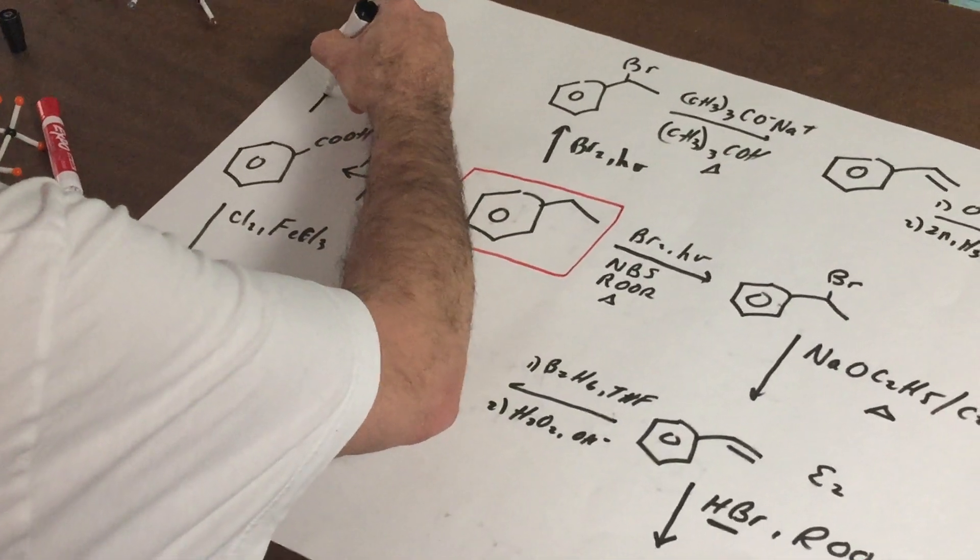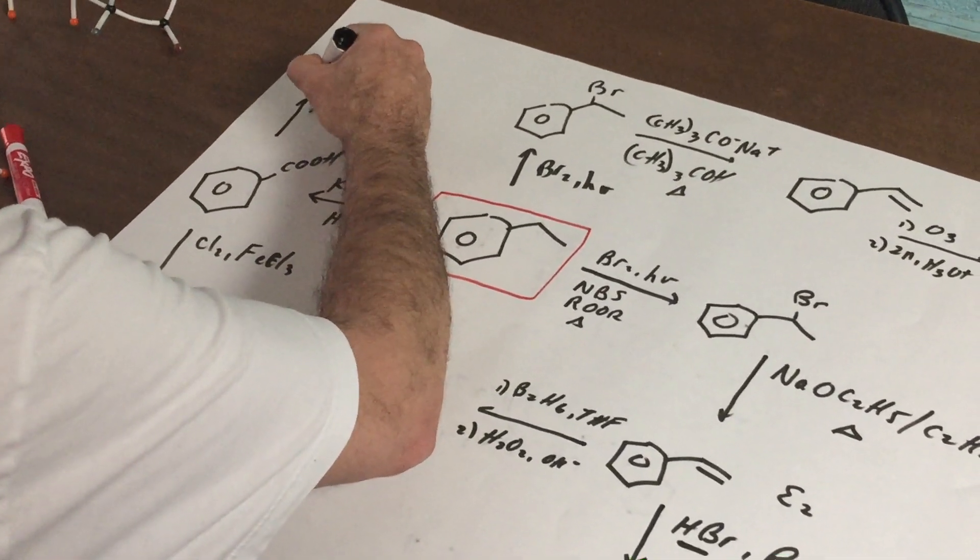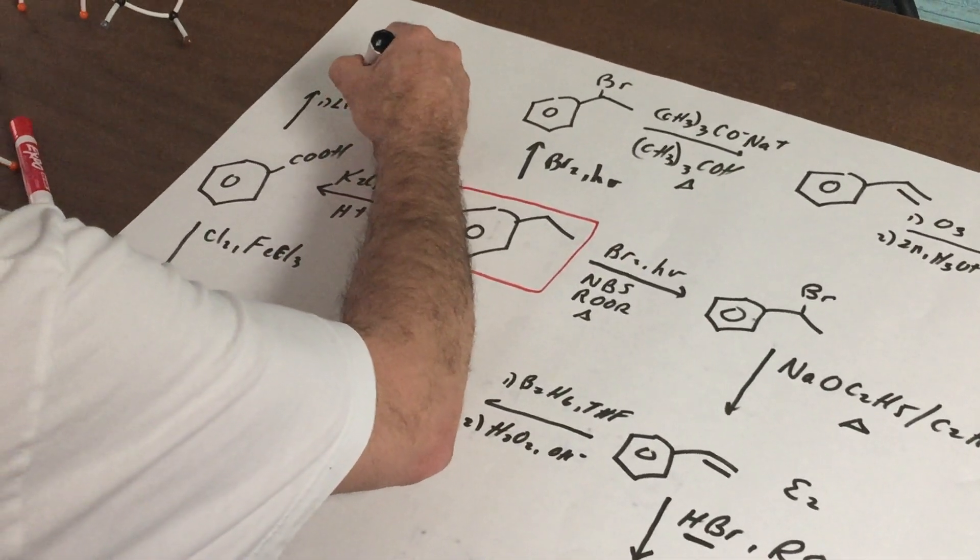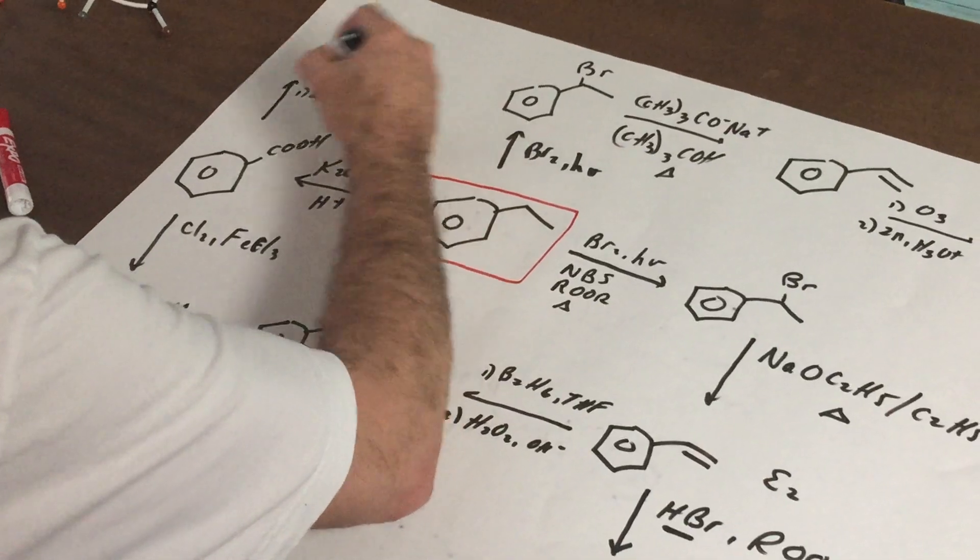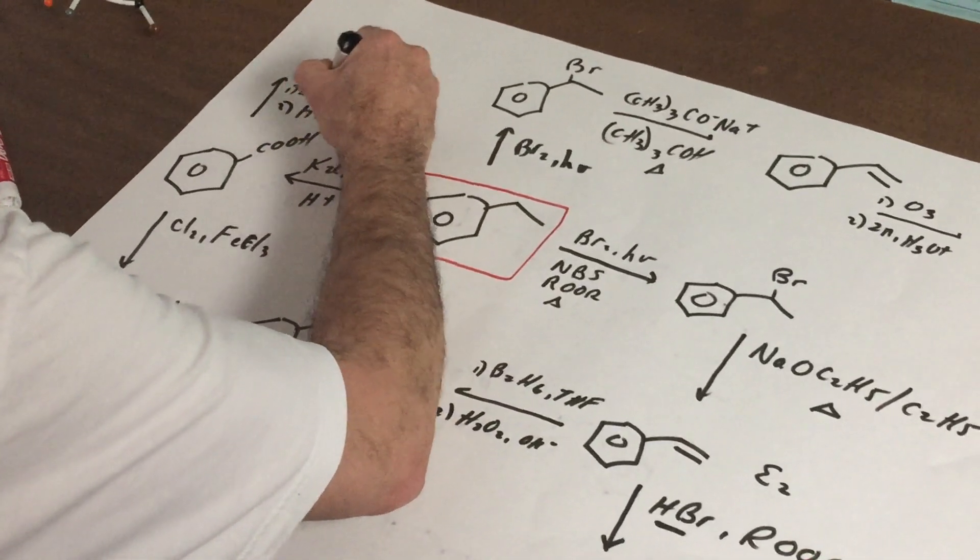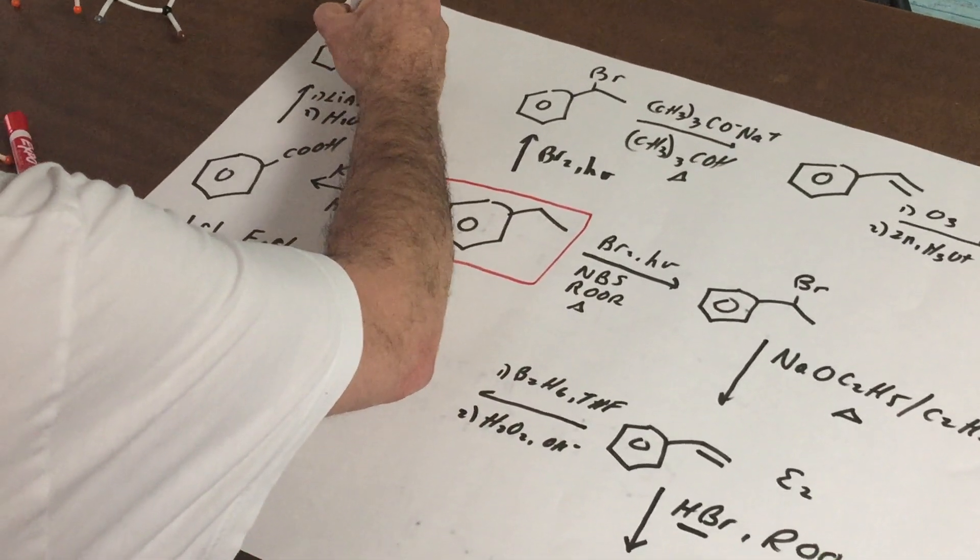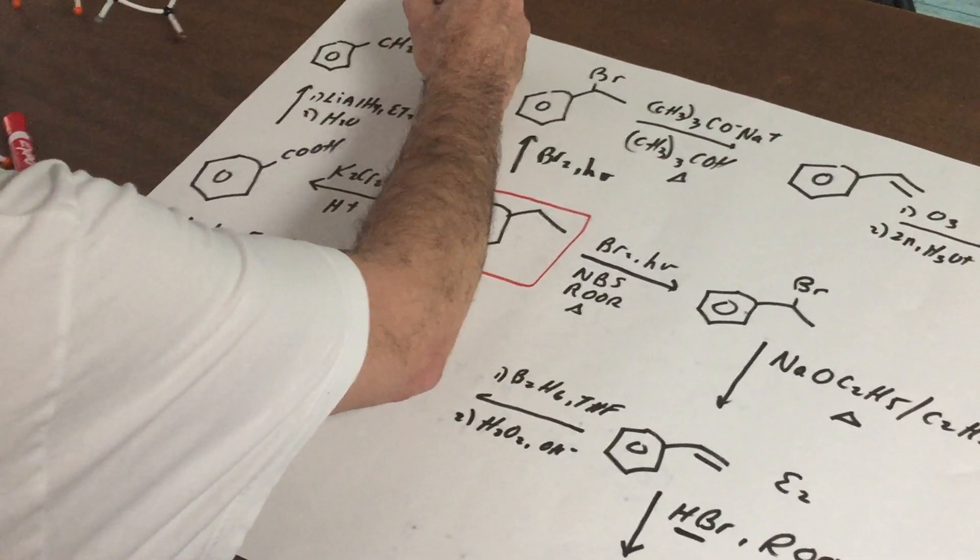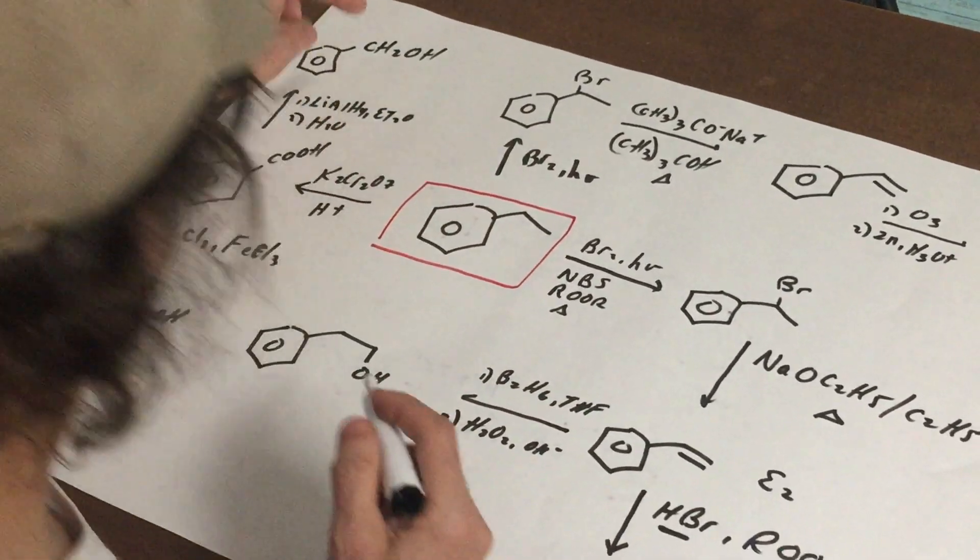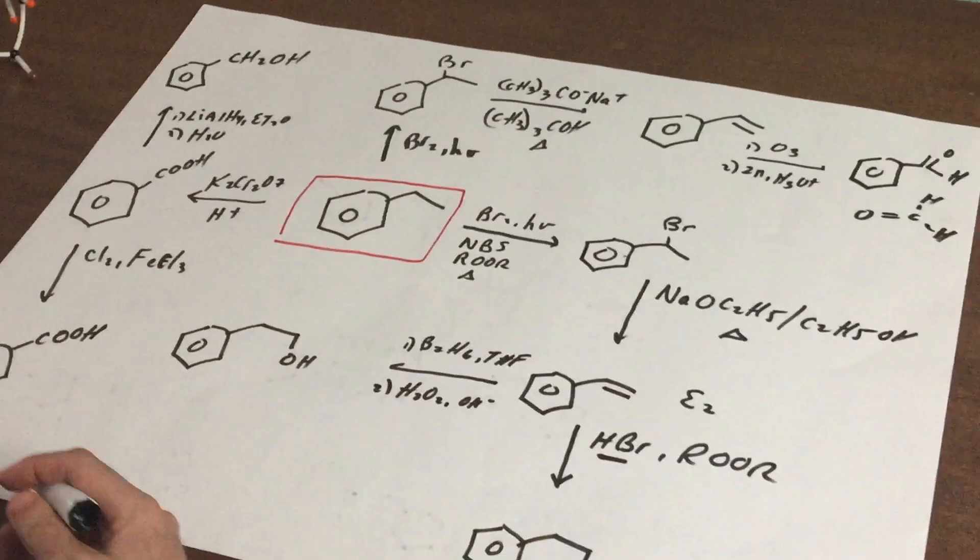Once we are here, what I could do is I could reduce this down with a reducing agent such as lithium aluminum hydride. We put in an ether, add some water, and that would give me the reduced benzoyl alcohol. So I've done a reduction here, I've done an oxidation here.